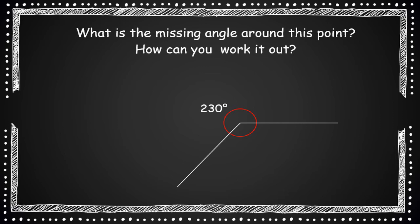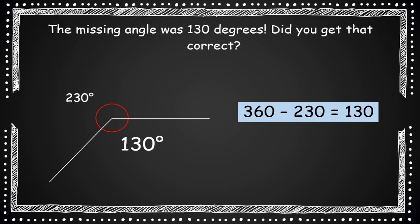So now that you know that, take a look at this one. What's the missing angle around this point? And how could you work it out? Pause the video and give it a try. So the missing angle was 130 degrees. Did you get that?